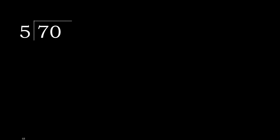70 divided by 5. We start with 7. 7 is not less than the divisor, so we work with 7. We ask: 5 multiplied by which number is nearest to 7, but not greater?